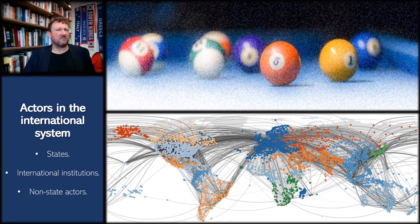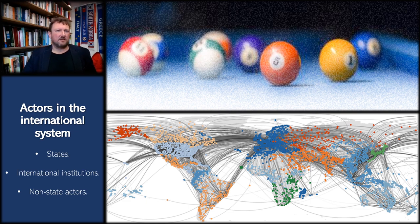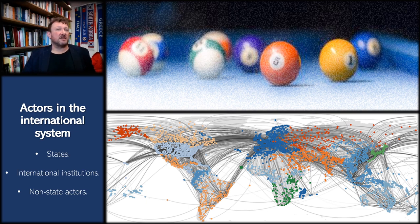Building on levels of analysis, we can break down the different types of actors in the international system. As IR analysts, we're interested in who these actors are, how they behave, and how they relate to each other. Traditional approaches to international relations interpret IR to mean relations between sovereign states. However, contemporary approaches include other non-state actors — multilateral institutions, multinational corporations, non-government organizations, social movements, and even individual people. Even non-human life forms, ecosystems, and future generations are now being included as actors in some perspectives.